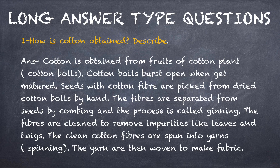Long answer type questions. The first question is: how is cotton obtained? Describe. Cotton is obtained from the fruit of cotton plant, that is called cotton balls. When cotton balls get mature, they burst open. Seeds with cotton fibers are picked from dried cotton balls by hand.